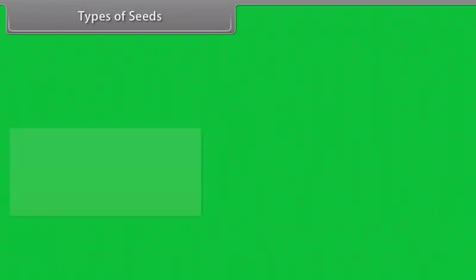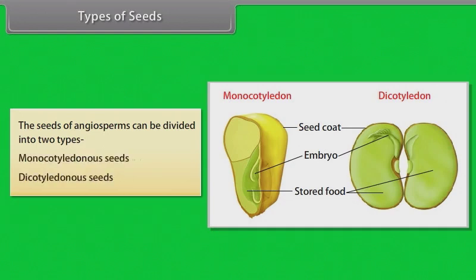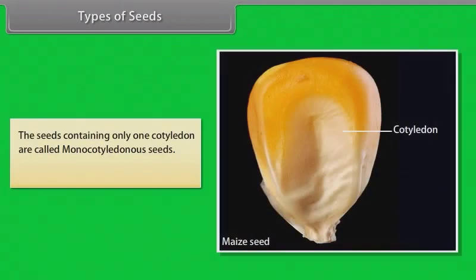The seeds of angiosperms can be divided into two types: monocotyledonous seeds and dicotyledonous seeds. The seeds containing only one cotyledon are called monocotyledonous seeds — example: maize.